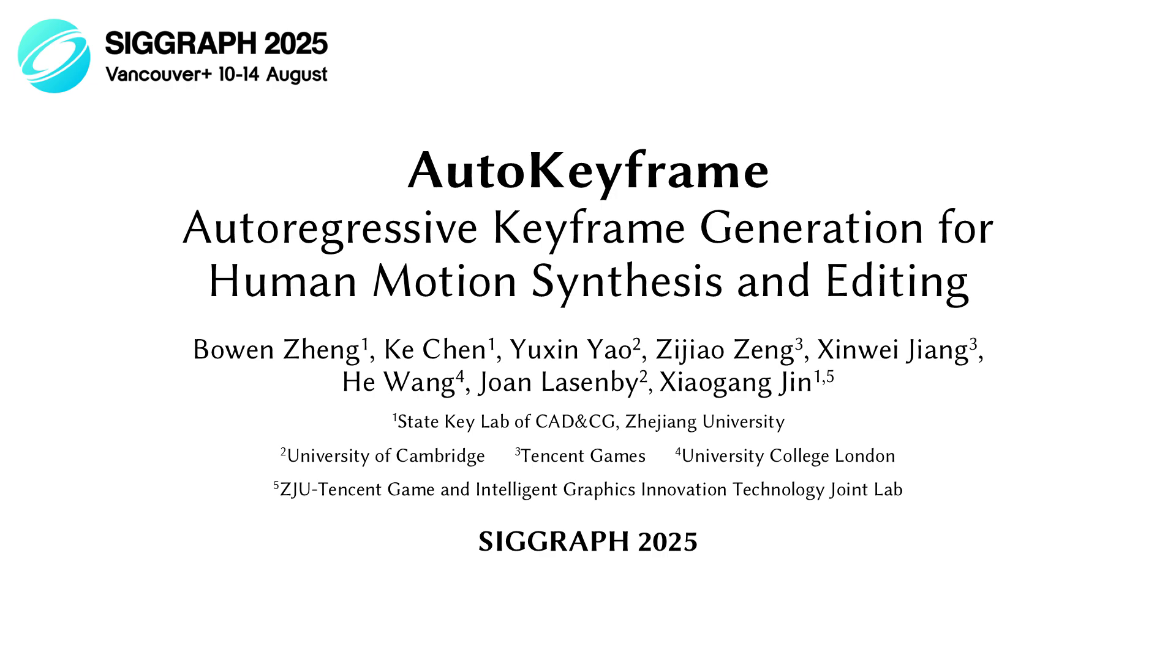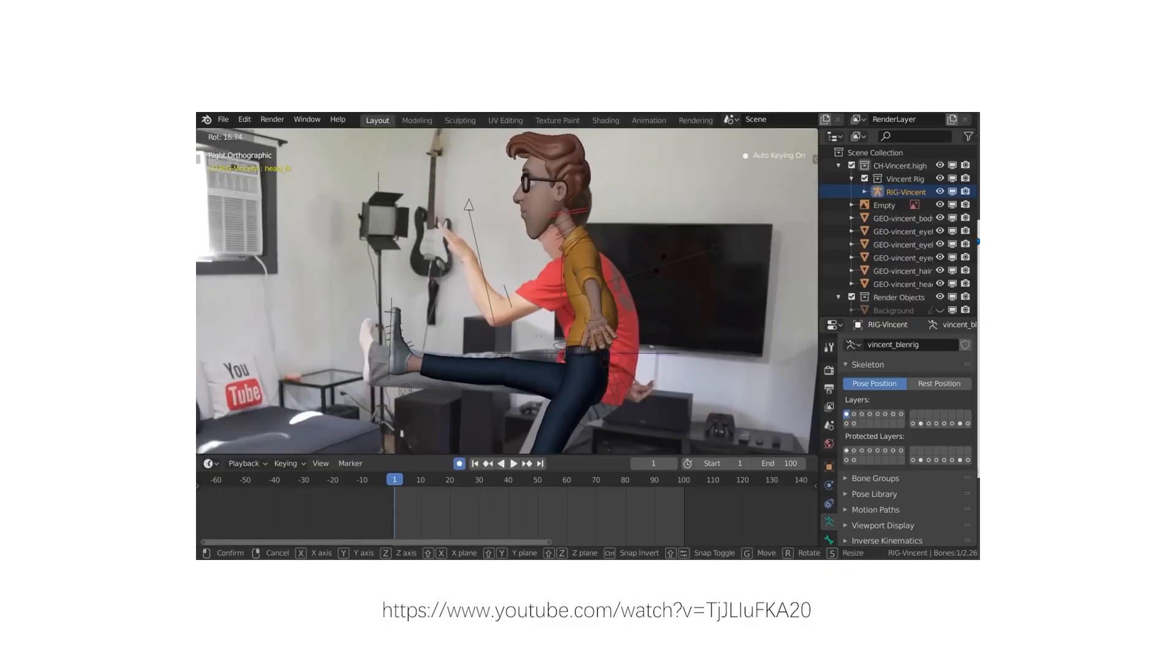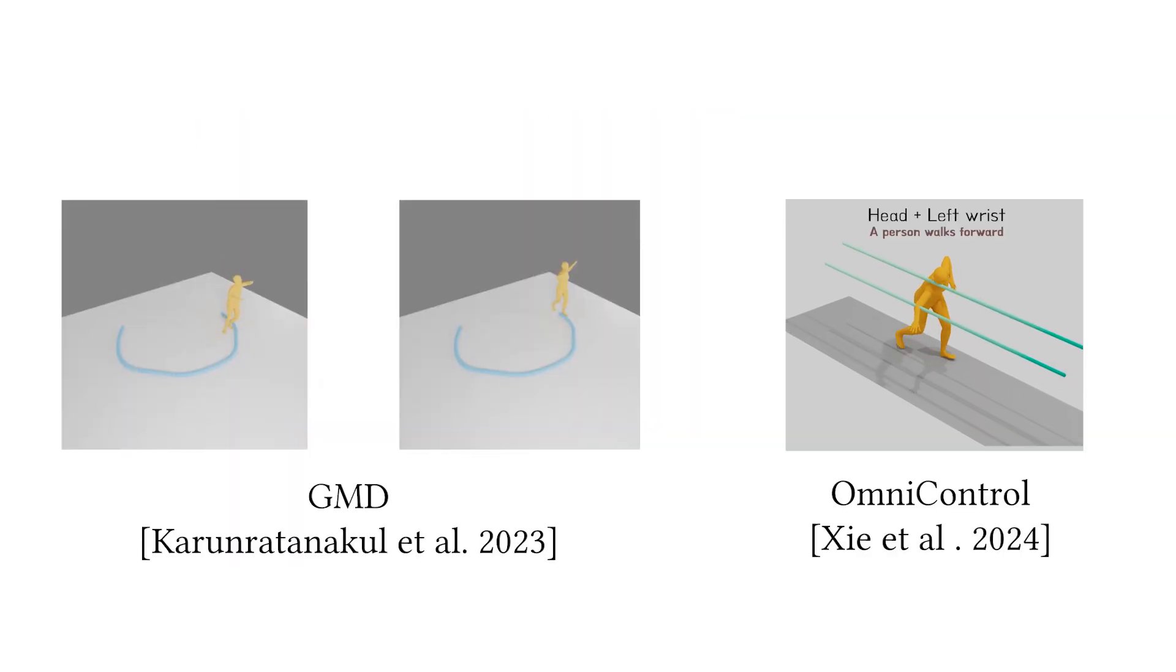In a standard character animation workflow, animators often manually create keyframes and perform iterative editing to align the results with their artistic vision. To reduce the time for manual keyframing, recent methods have enabled fine-grained spatial control for motion synthesis.